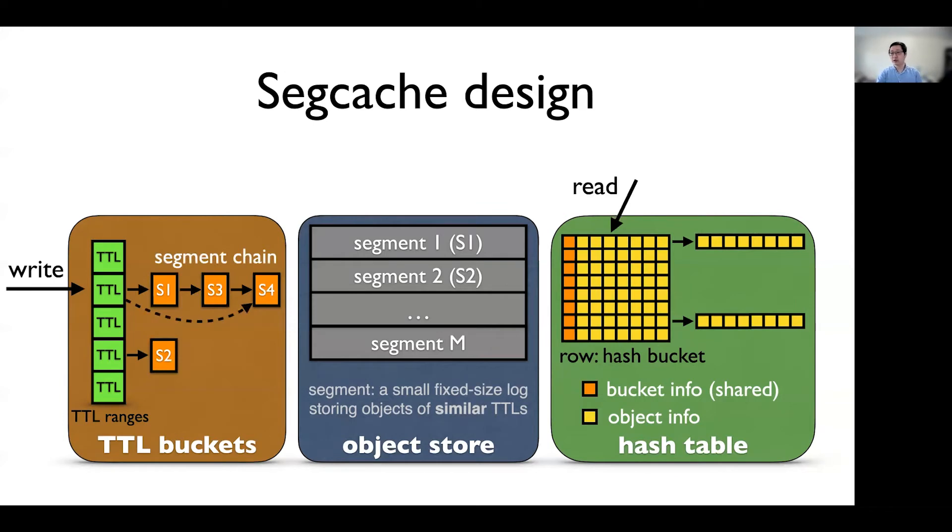To read an object, we first look up in the hash table and find the object information, which is a pointer to the data in the segment, and we read the data from the segment.